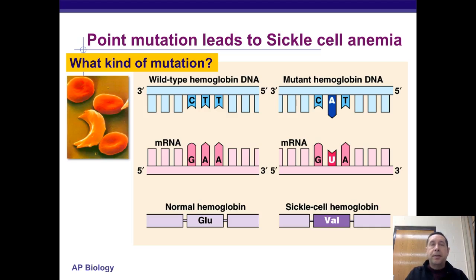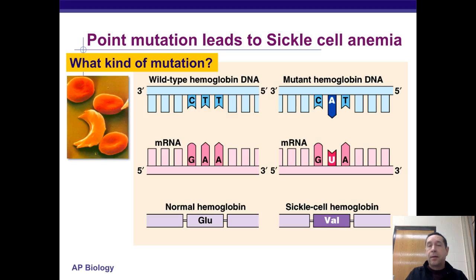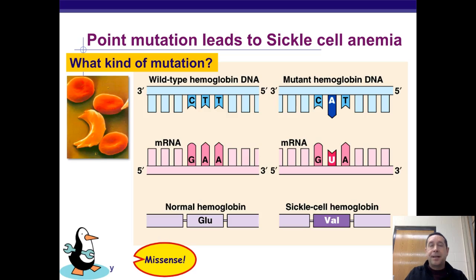Point mutations can lead to diseases in humans like sickle cell anemia. Here you can see an example of the mutation — a point mutation that causes a mutation in the hemoglobin gene, which affects the ability to carry oxygen, but also causes the cells to take on that unique shape that can stick together, cause problems, and oftentimes leads to premature death. This is a missense mutation.